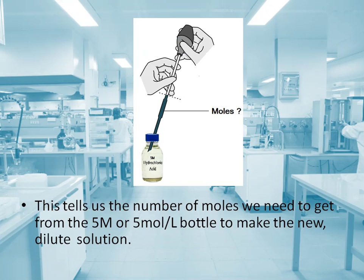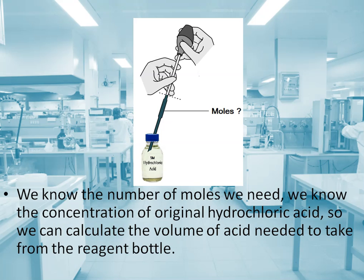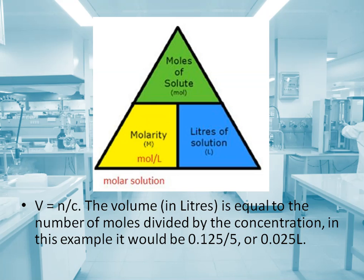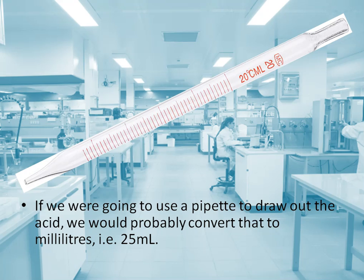This tells us the number of moles we need to get from the five molar bottle to make the new dilute solution. We know the number of moles we need and we know the concentration of the original hydrochloric acid, so we can calculate the volume of acid needed from the reagent bottle. The volume in liters is equal to the number of moles divided by the concentration — in this example, 0.125 divided by 5, which is 0.025 liters.